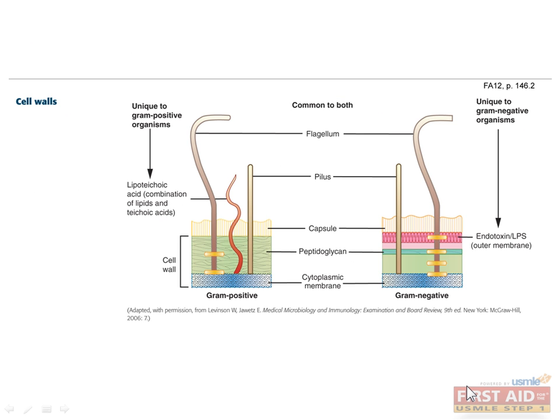There are some key differences between the cell wall structures of gram-positive and gram-negative organisms. Gram-positive organisms have thicker cell walls composed of a high amount of peptidoglycan and lipoteichoic acids, a combination of lipids and teichoic acids. These characteristics are useful in distinguishing bacterial serotypes, promoting bacterial interaction with human cell receptors, and initiating host immune responses.